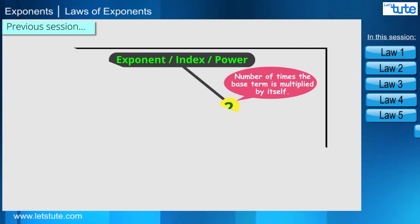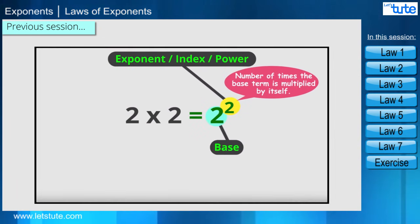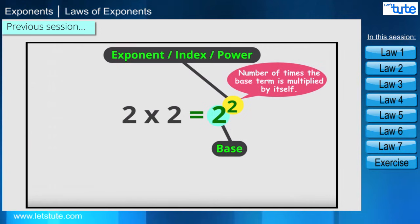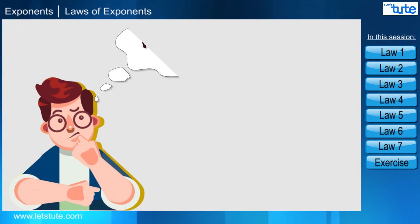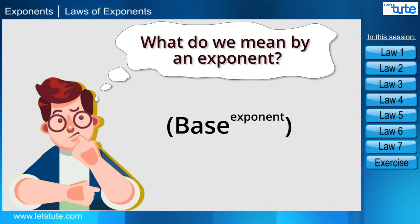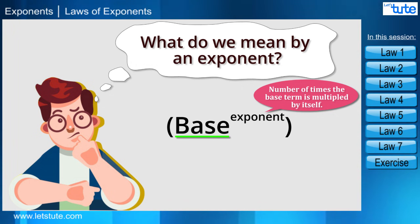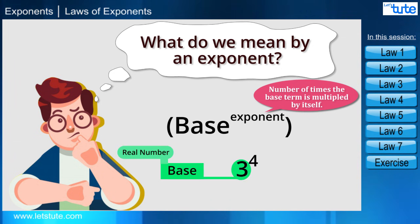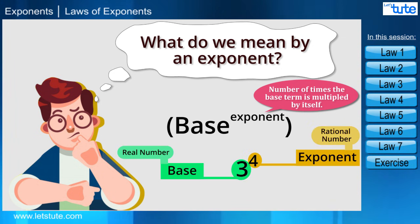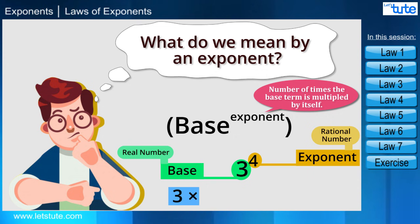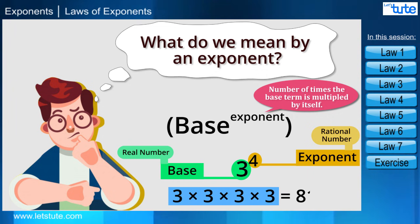Hello everyone. In our previous session we learned about exponents, so let's have a quick review. An exponent is placed to the upper right corner of the base number and signifies how many times the base term is multiplied by itself. For example, 3 raised to the power of 4: here 3 is the base and 4 is the exponent, meaning we multiply 3 four times, which equals 81.